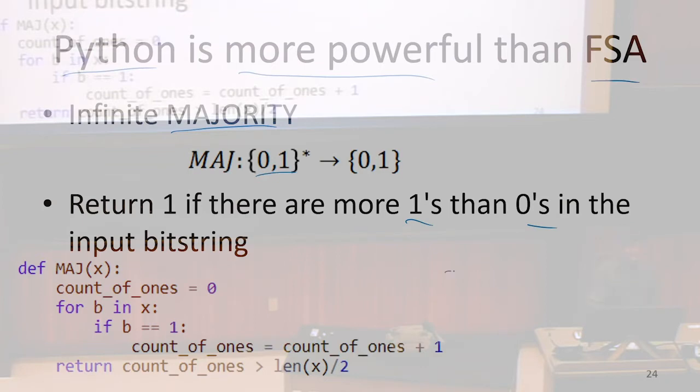It's not too difficult to compute majority in Python. We can do this infinite function using some Python code where we just say for each of the bits in our input, if that bit was one, add one to the count of the bits and then check if that was greater than half the total bits. Even though this is really easy to do in Python, it's going to be absolutely impossible to do with a finite state automaton.